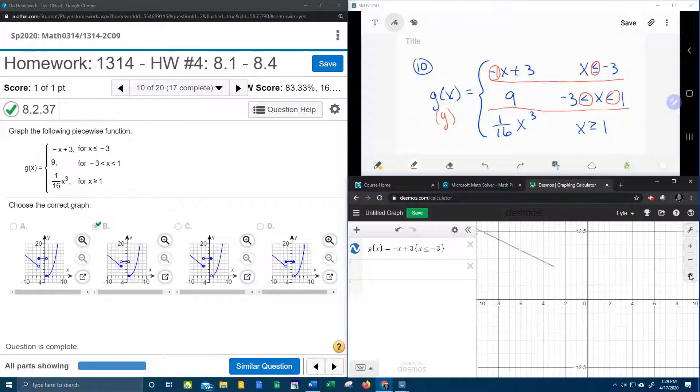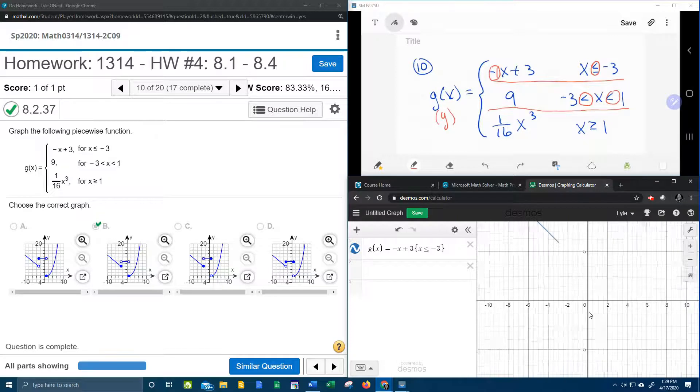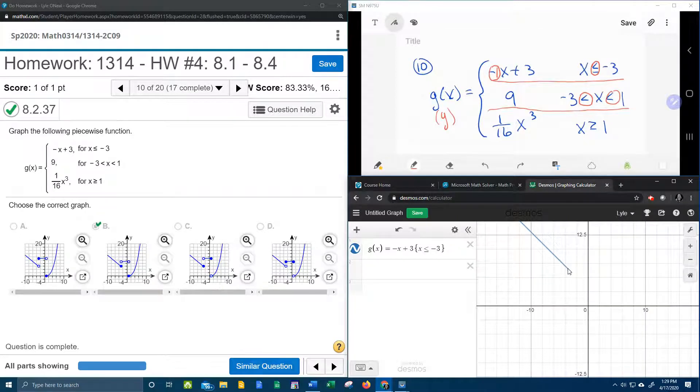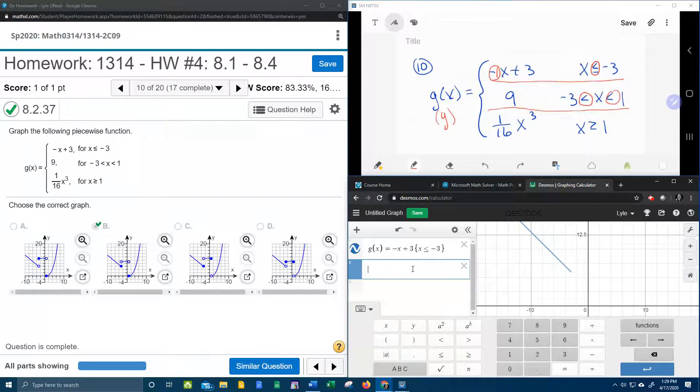And if I change my window back to a standard window, we can see that that does give me a line going down. If I click and drag, we can see that that does end in a solid dot.